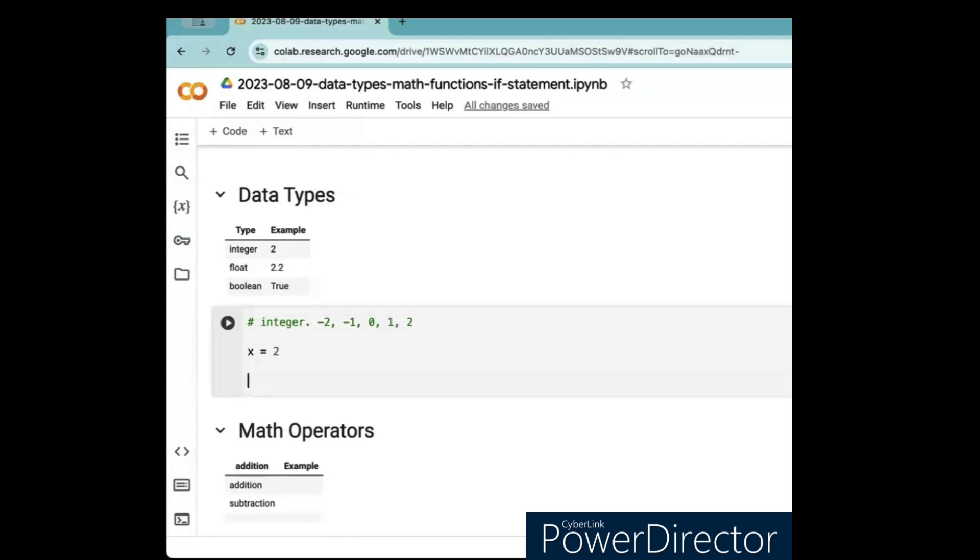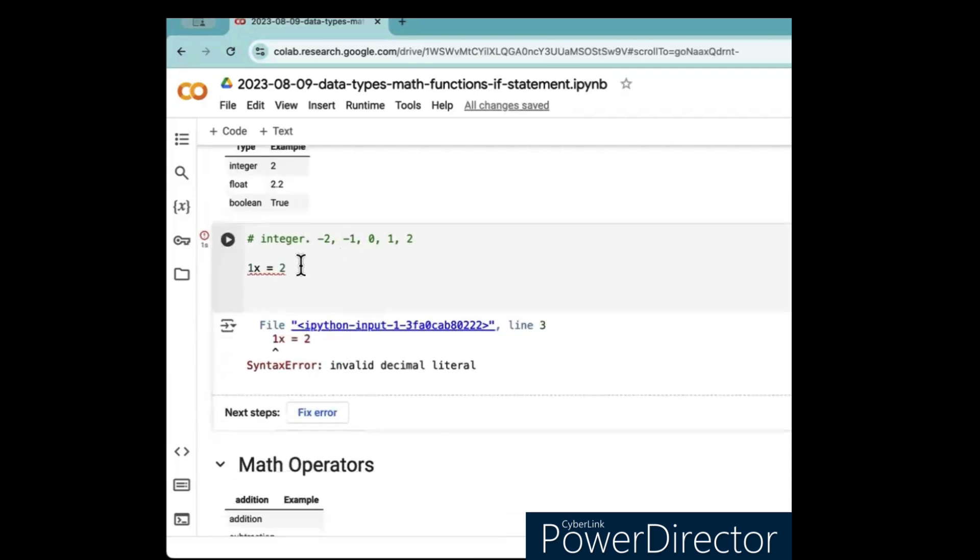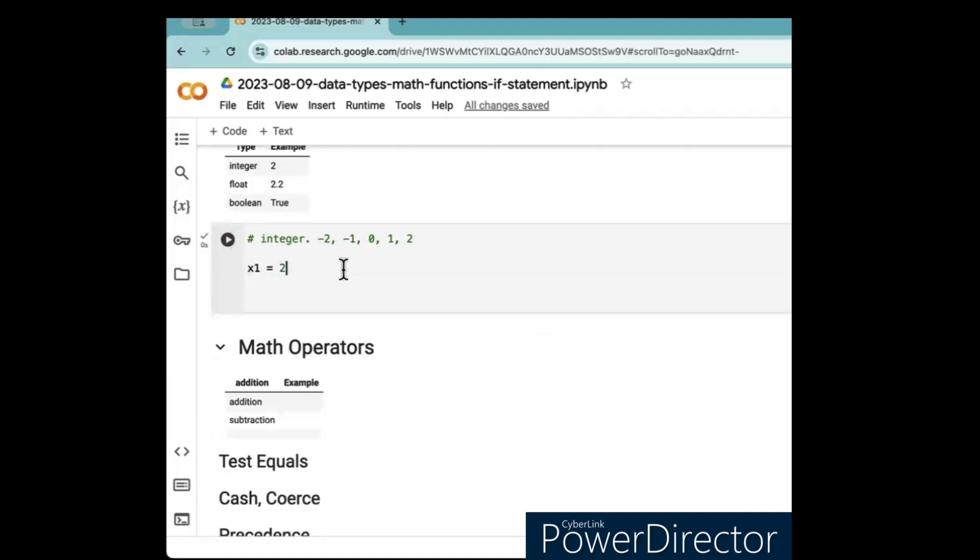Use any name you want. Now, there are some rules about this. Like, you cannot use, you cannot start a variable name with a number. If I do that, that'll give an error. Starting up CoLab. See, and you can't do that. If you could have x1. That's okay, right?